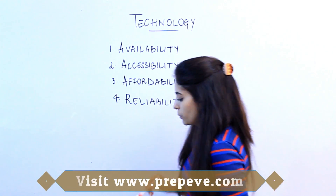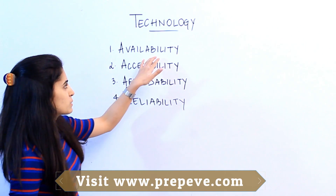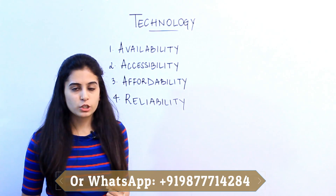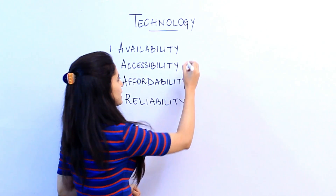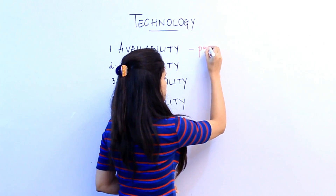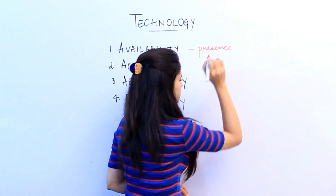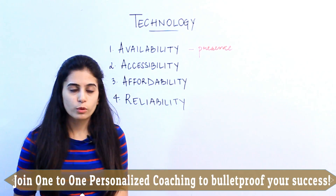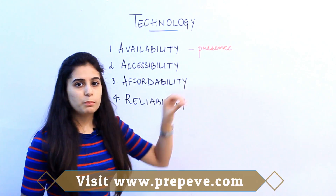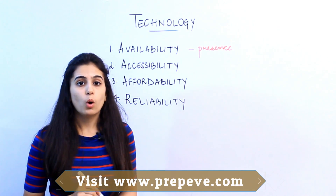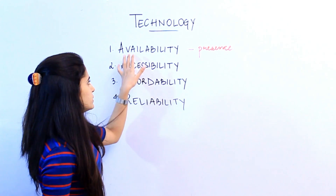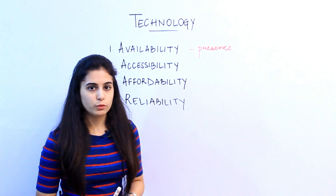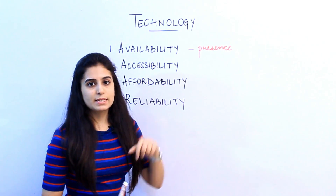What is availability? Availability is something that is present that you can use if there is a need to use it — it is all about presence. For example, if you want to buy a commodity like a mobile phone, is it available in your country? Has it already been launched in India? If so, then it means there is availability of that particular model — its presence is there in India.